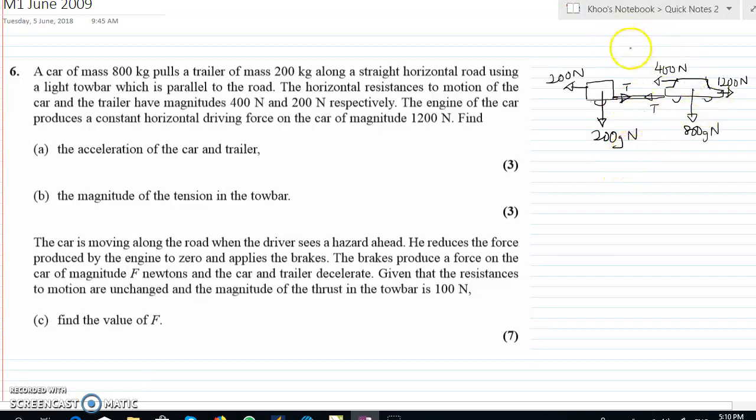Alright. So in this question we know that the car is accelerating. So the equation of motion would be depending on whether you want to take for the whole system or just the car or just the trailer. But which one do you do? Since they ask you to find the acceleration of the car and trailer, we consider the whole system. When you do that, we don't bring in the T for the whole system.